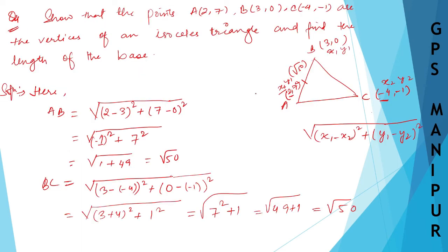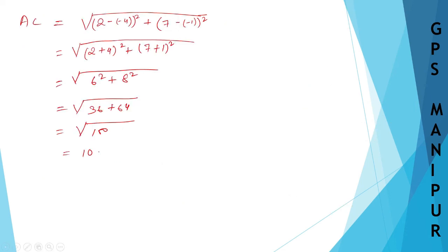Now if you look here carefully, let me rough this one and make you understand what we are doing. So we have ABC. We found out AB to be root 50, BC also root 50, and this one we found out to be 10. So AB and BC are equal. We are asked to prove isosceles triangle. Isosceles triangle means any two sides are equal.